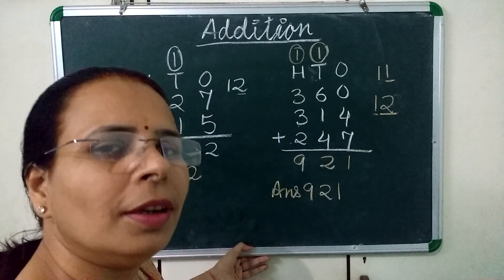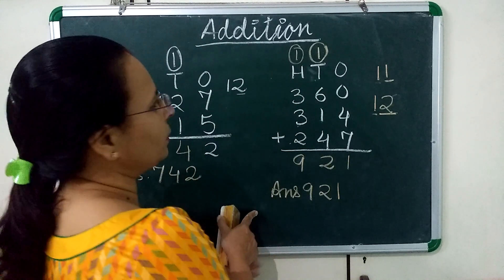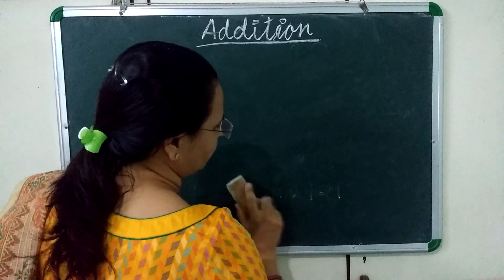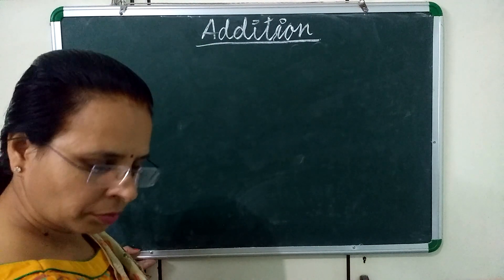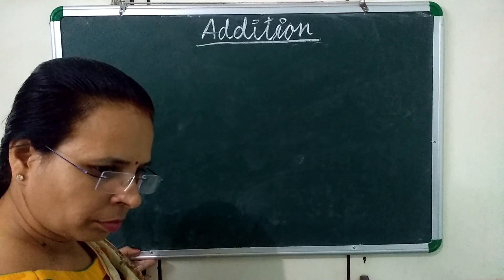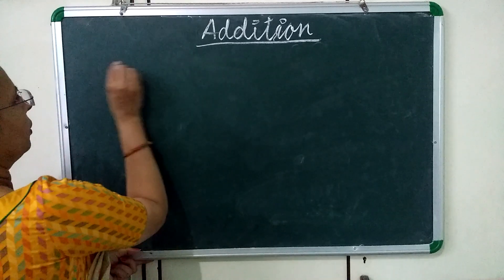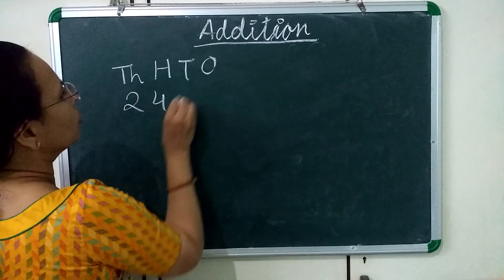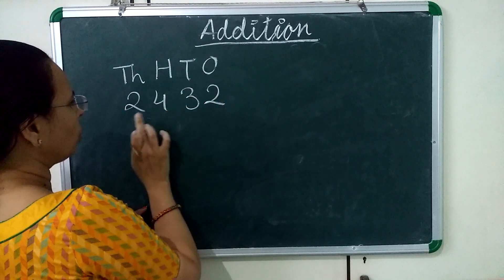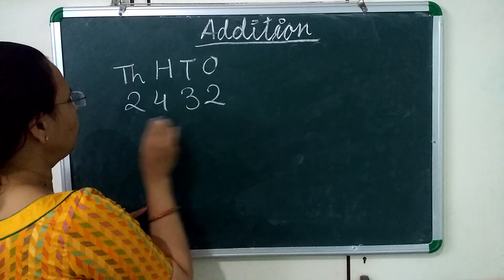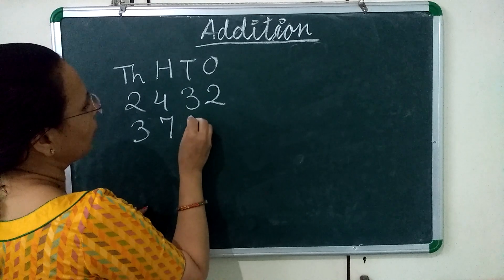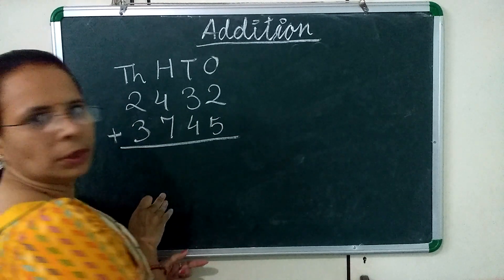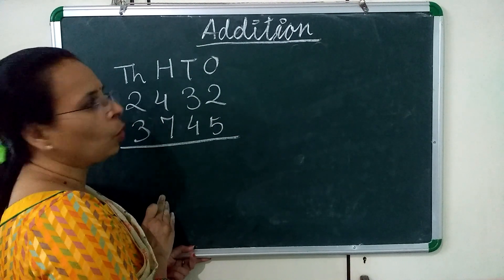Now we will learn the addition of 4 digit numbers. I am writing a question here: 2,432 and 3,745. First we will add these two numbers, starting from the 1's place.